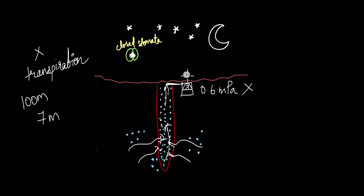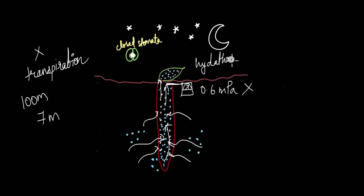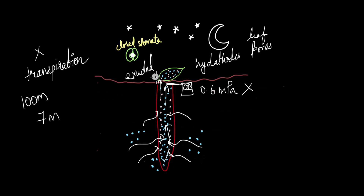So how does this cause guttation? All these substances have accumulated in the roots, and as more and more water enters the root, the substances are pushed up to the upper parts of the plant, like the leaves. In these leaves there are special structures known as hydathodes and other leaf pores. Through these leaf pores and hydathodes, the solutes and water are pushed out or exuded out, which leads to the formation of droplets on the leaf surface — guttation.